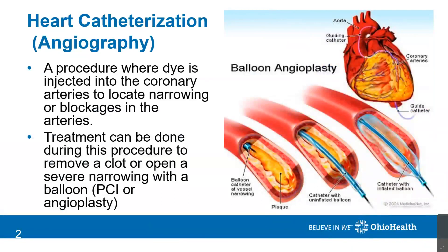If you have a blockage in your coronary arteries, it might be necessary to have a procedure done to reestablish that blood flow to the heart. A heart cath can be done to locate areas in the heart where a blockage is present. During an angiogram, a thin flexible tube is fed through an artery or vein via an incision in either your groin or your arm. Dye is injected into the arteries and x-ray images of your arteries can reveal any occlusions of blood flow in the heart.